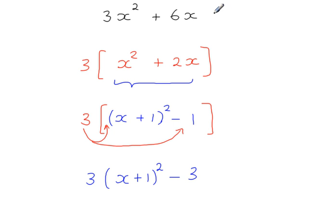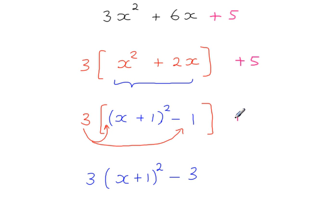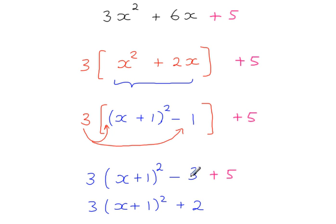How would this method differ if there was a 3-term quadratic? Say if we had a plus 5 on the end — we're not going to do anything with that constant until the very last step. Keep your focus on the squared term and the x term, bringing the constant down each step, and then in the very final step simplify minus 3 plus 5 to give you 2.